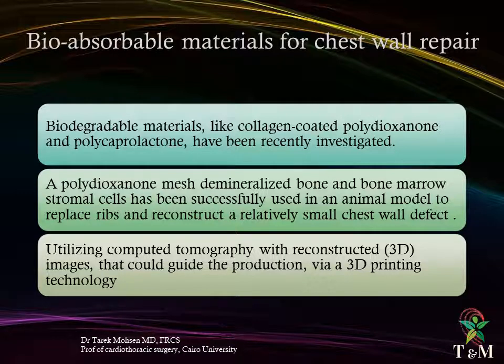Despite recent advances in titanium prosthetic bar design to repair many chest wall defect configurations, the prostheses are far from ideal. There are good results using bioabsorbable materials for chest wall repair, mainly important in growing pediatric patients. A recent development is computed tomography with reconstructed three-dimensional images guiding production via 3D printing technology of accurate resin, polymer, and metal prostheses. A combination of materials can be used, some biodegradable, others to provide rigidity. More exciting is the evolution of 3D-printed scaffolds allowing growth and colonization by the patient's own cells into biodegradable materials like collagen-coated polydioxanone and polycaprolactone, which have been recently investigated. A polydioxanone mesh with demineralized bone and bone marrow stromal cells has been successfully used in an animal model to replace ribs and reconstruct chest wall defects.